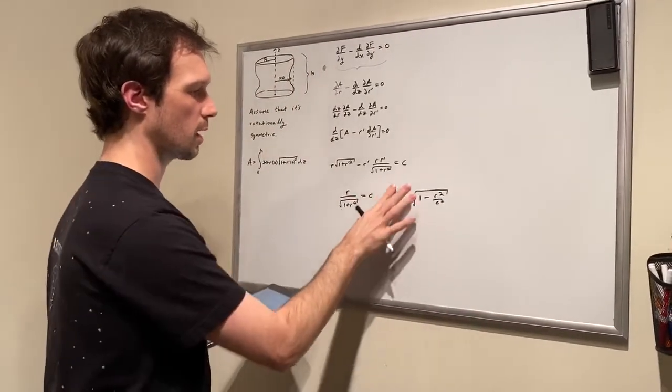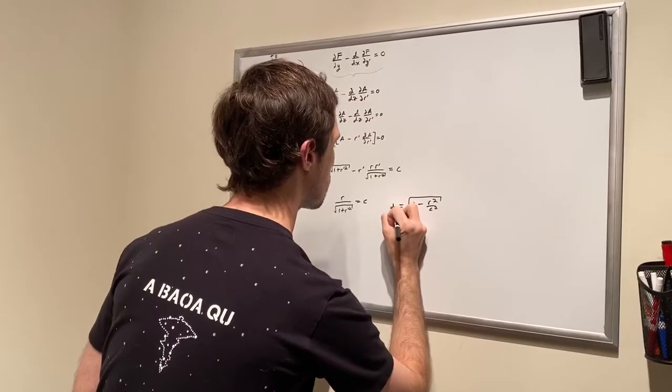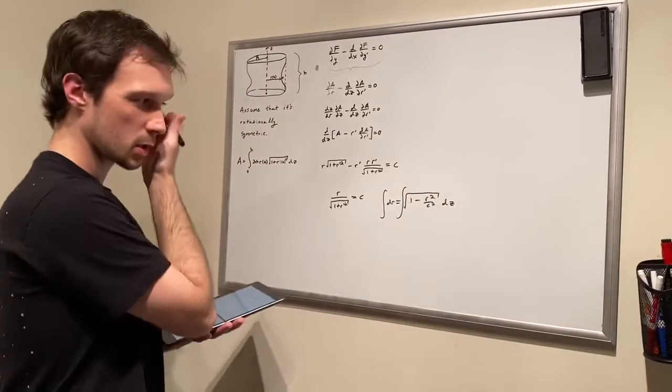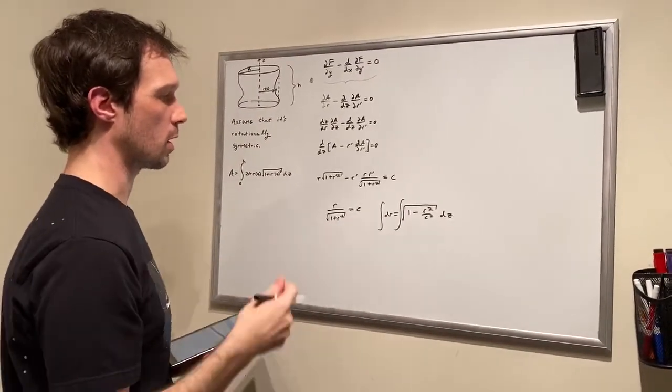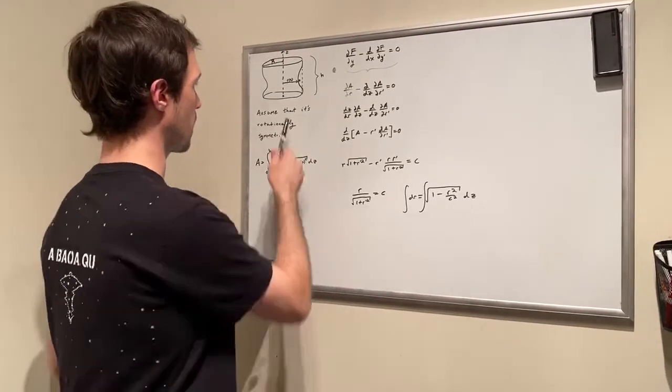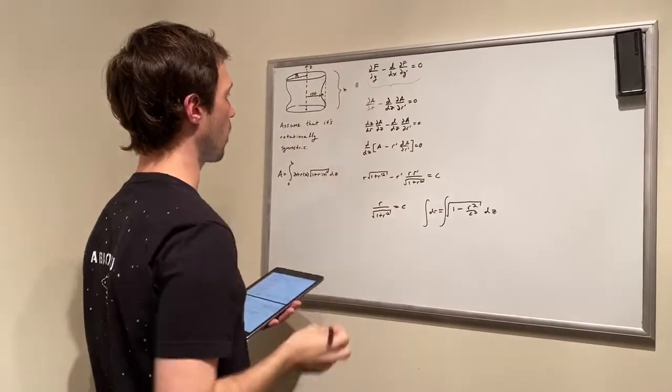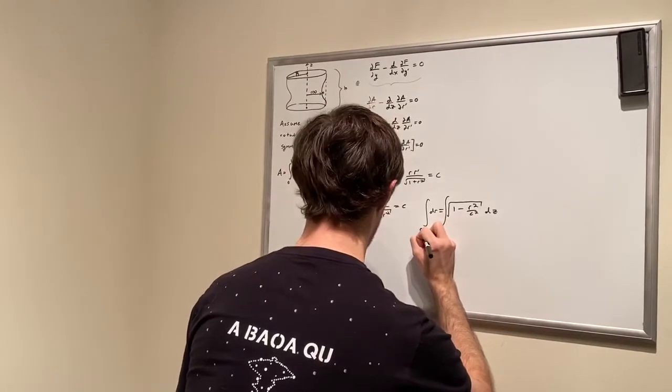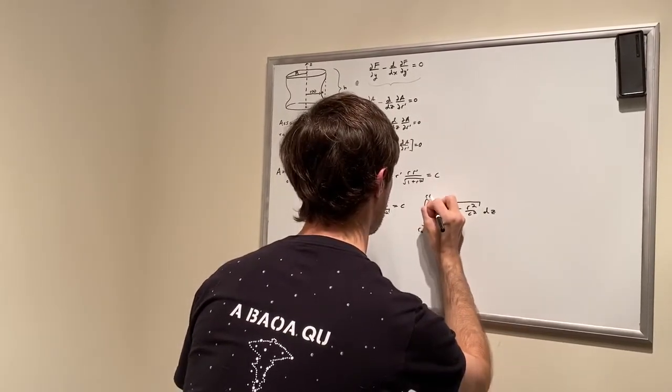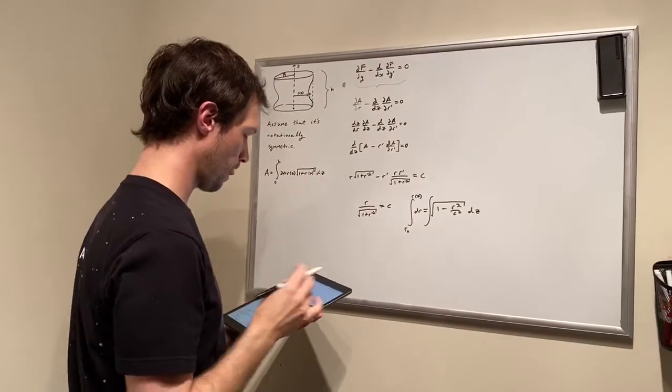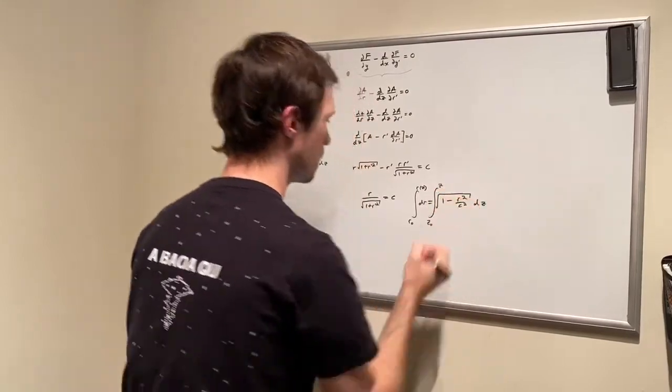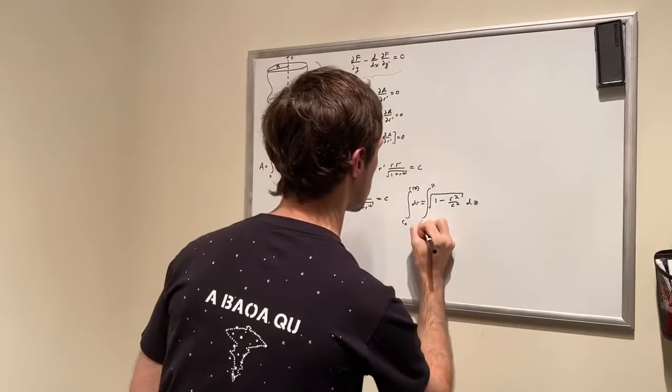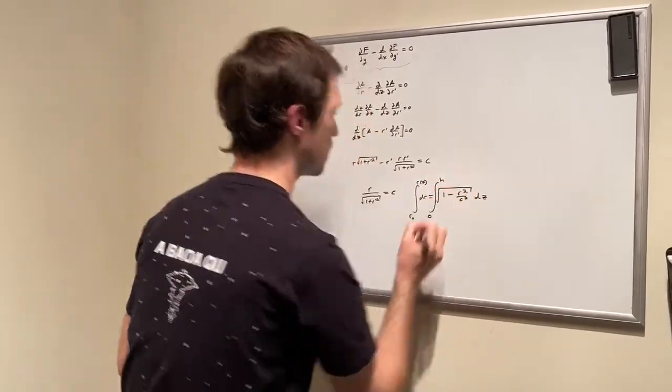All right and so then what we can do there is we can separate it and we can do our integral. So we think what are the ranges for R are? Well we don't know okay. So that's why we're going to have R naught and we're going to have R in some Z position right. So we're going to have R naught and R of Z okay and then we're going to have Z naught to Z and then Z naught in our case this is just going to be zero. We're going to get an H here okay.